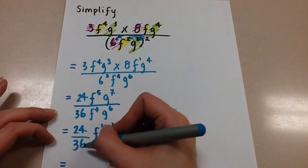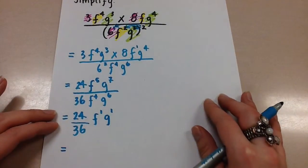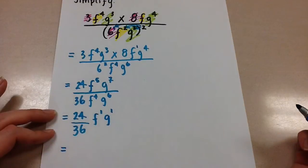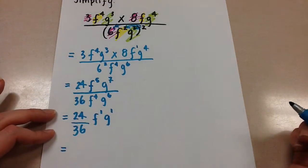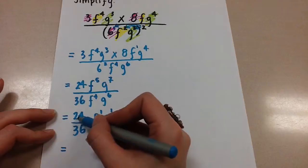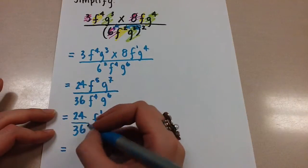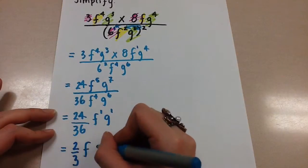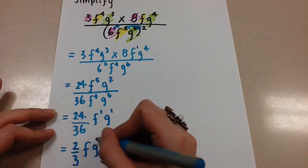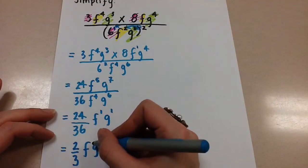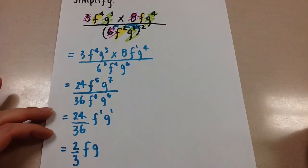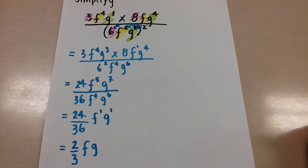So we have the fraction 24 over 36. We always want to reduce fractions — reduced fractions are better than decimals. We can divide both numbers by 12, and that gives us 2 over 3 FG. We don't need to write the 1 in the exponent — it's a bit redundant. We know if there's nothing there, it is in fact an exponent of 1. So there we have our exponent laws for simplifying expressions.